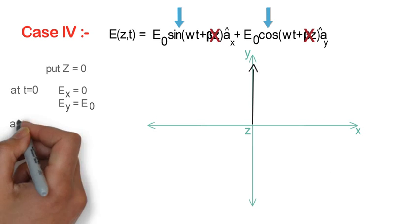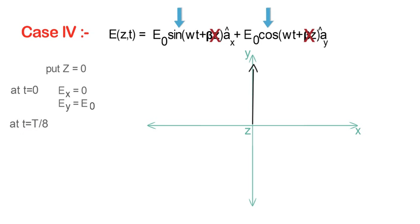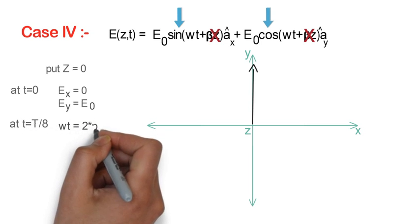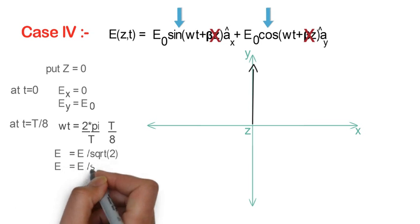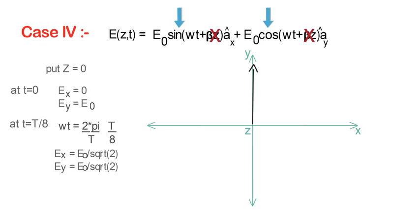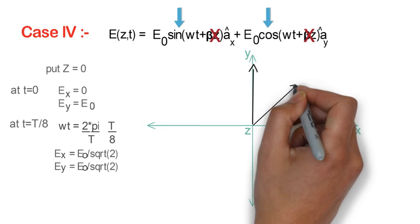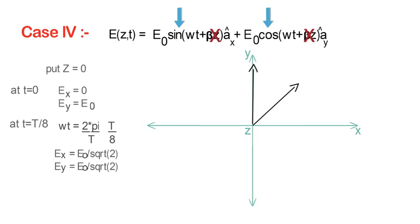At t = T/8, where capital T is the time period of oscillation, ωt can be written as 2π/T × T/8 since we all know that ω = 2π/T. So Ex will become E0/√2 and Ey will become E0/√2. So we can show the resultant like this at an angle of 45 degrees to the positive x direction.